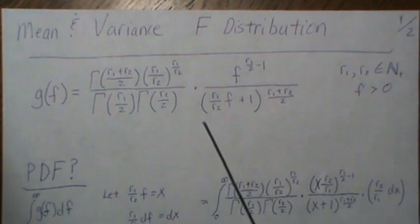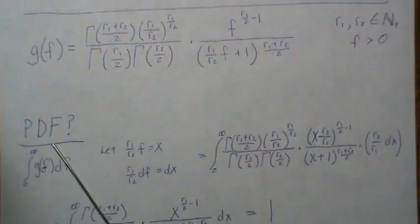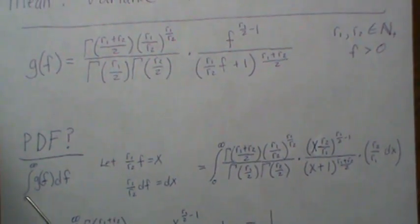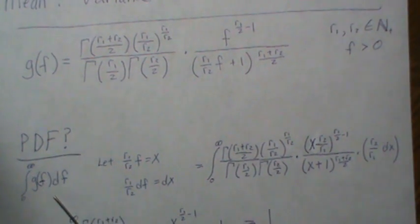And so first of all we want to show that this is a PDF and so what we do is we integrate this density over zero to infinity.